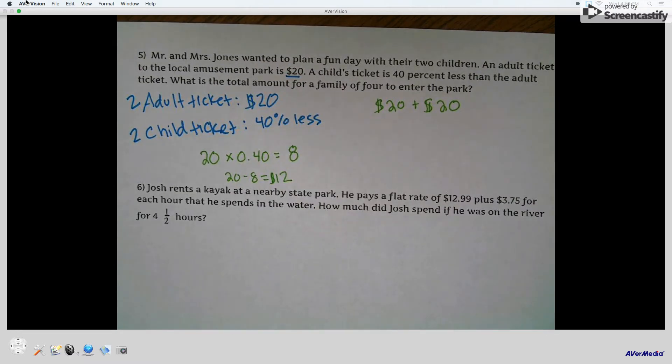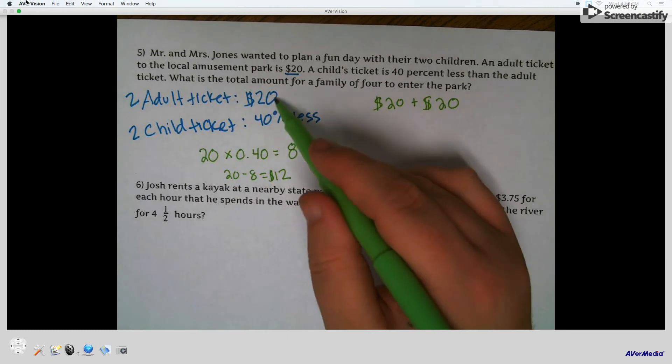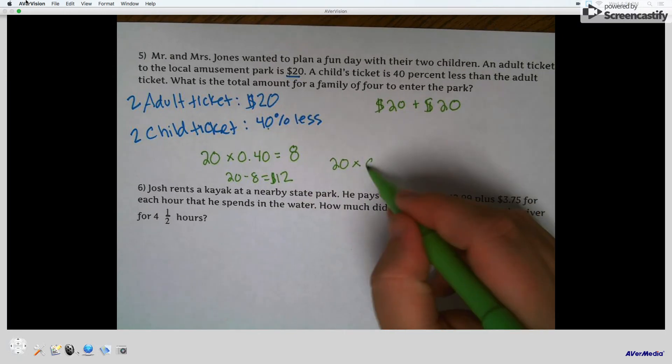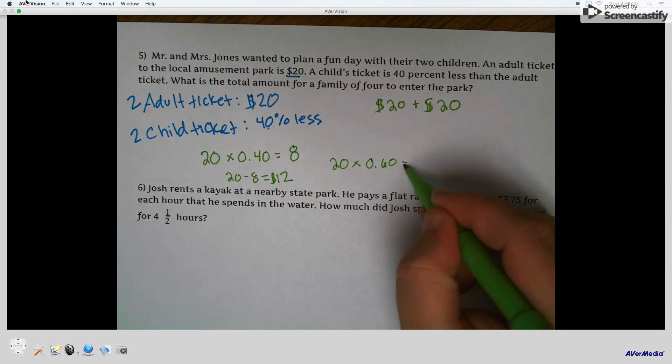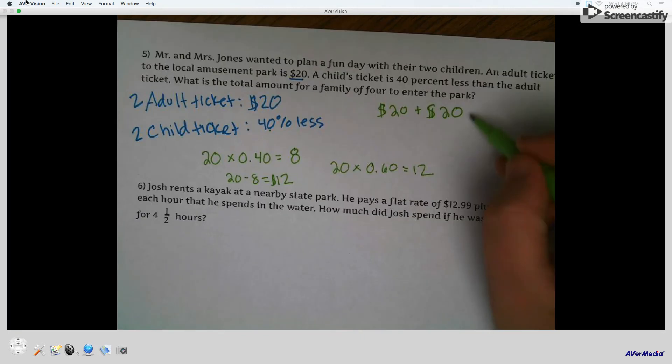So 20 minus 8 is 12. So each child's ticket is 12. Or you can say, you can save yourself all that hassle. Say 20 times. Okay, so it's going to be 60% of 20. Because 100 minus 40 is 60. You're paying 60% of the value. So you can just right from the get-go get 12. 20 times 0.60. So then I add $12 plus $12.